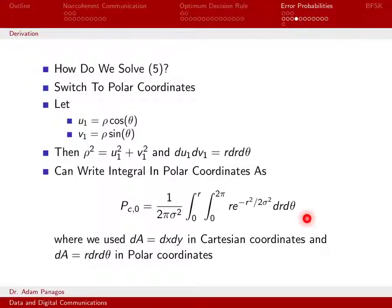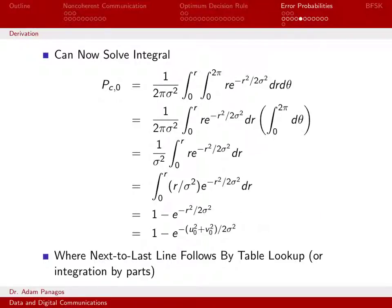Let's work on this integral. You'll notice in this double integral over r and θ, there is no θ dependence. The U1² plus V1² turned into r² times (sin² + cos²), and since sin² plus cos² equals one, the θ dependence went away.